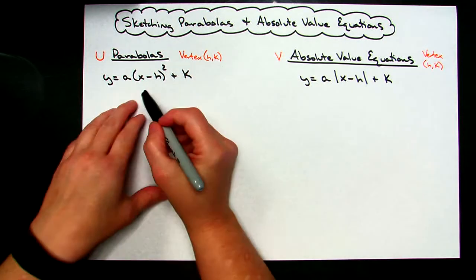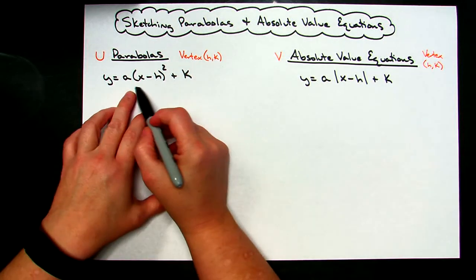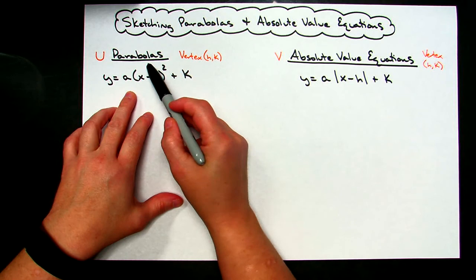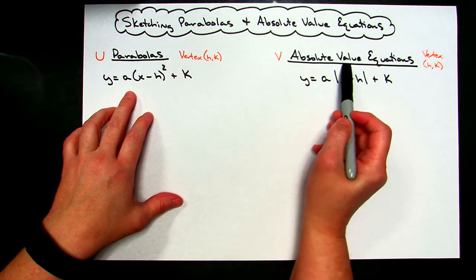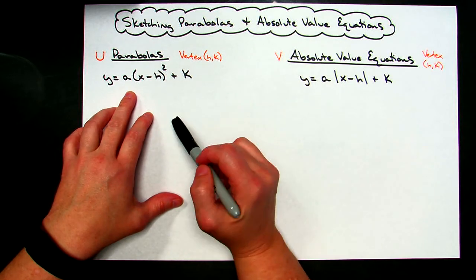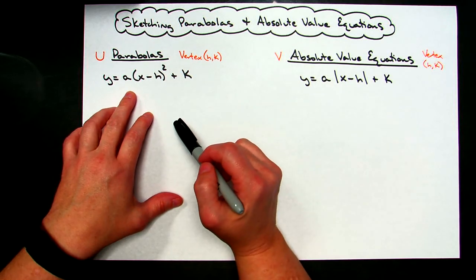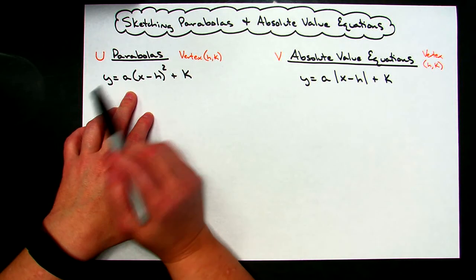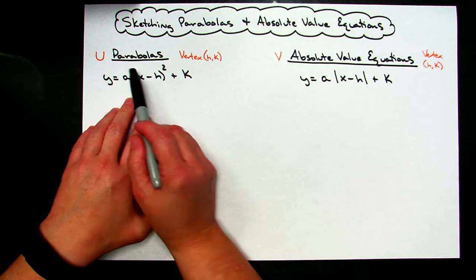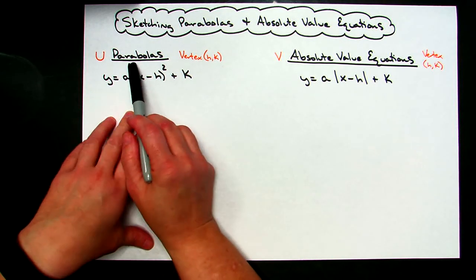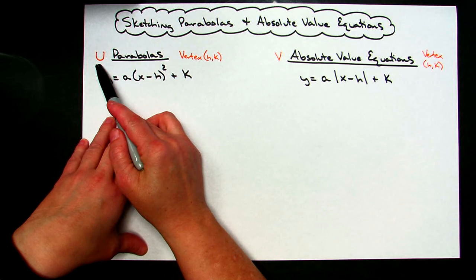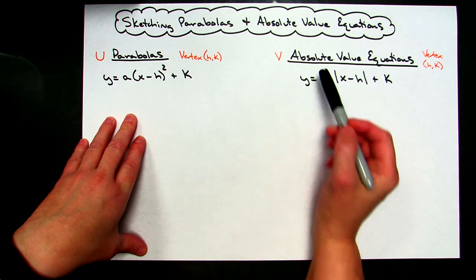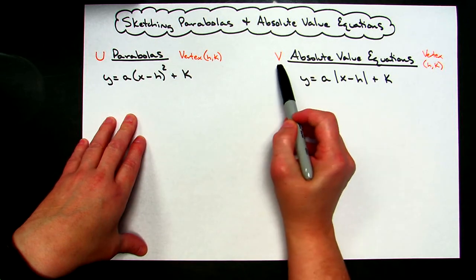Both of these equations are very similar. Both a parabola and an absolute value equation have vertices, and they shift very similarly, so that's why I put these two things together. You should know that parabolas are basically U-shaped graphs and absolute value equations are V-shaped graphs.